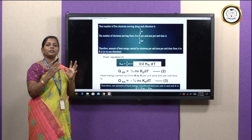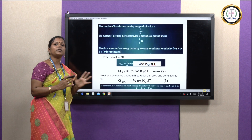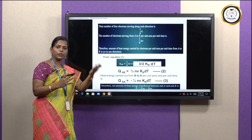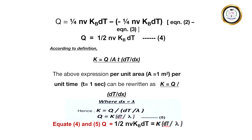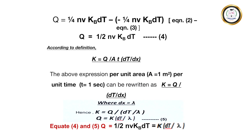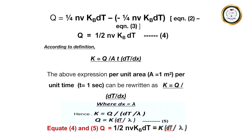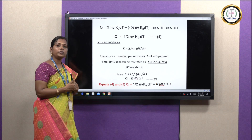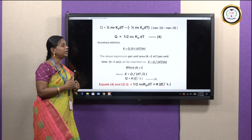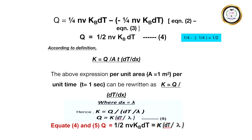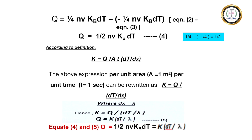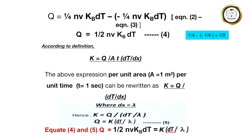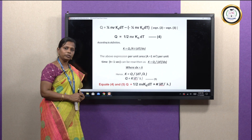Now we find the net heat energy by subtracting Q_BA from Q_AB. Equation 2 minus equation 3 gives (1/4)NVK_B dT minus (−1/4)NVK_B dT, resulting in a net heat energy of (1/2)NVK_B dT. This is equation 4.